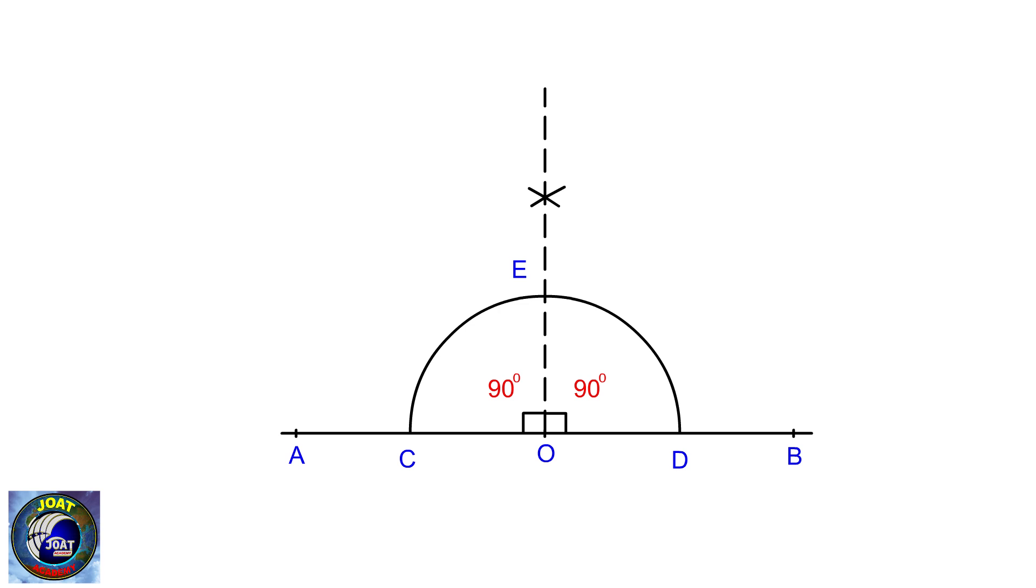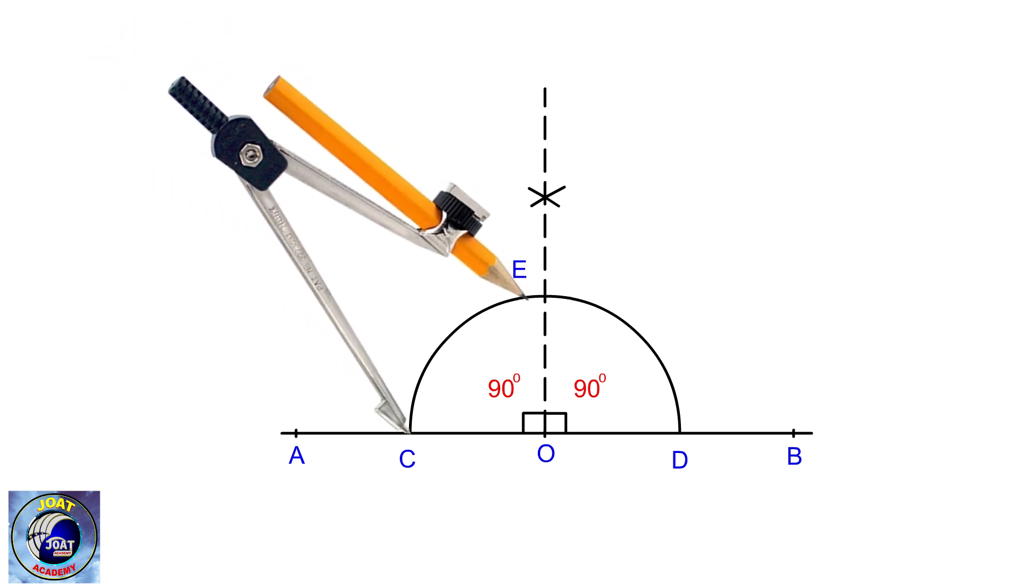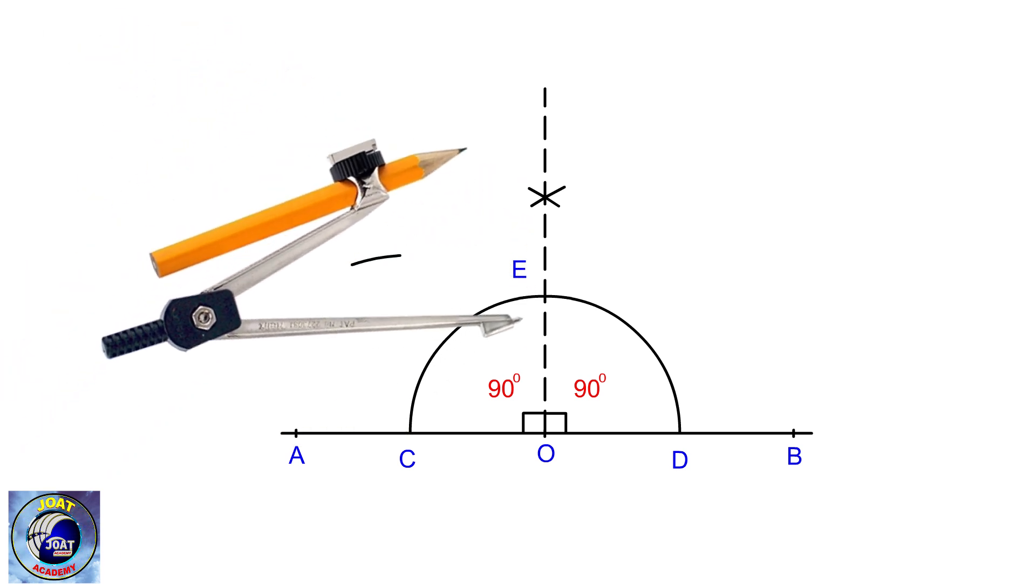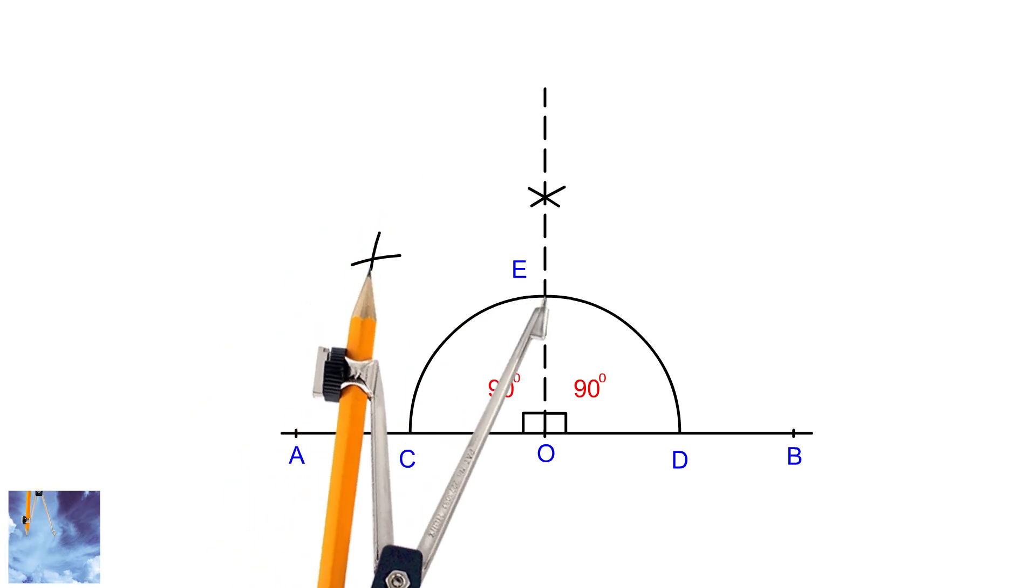To achieve this, place the compass at point C and draw an arc. Then, place the compass at point E and draw another arc to intersect the first arc.